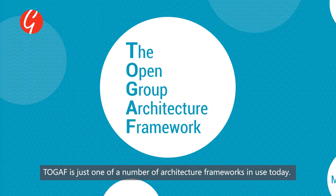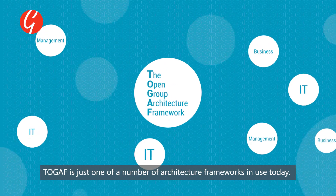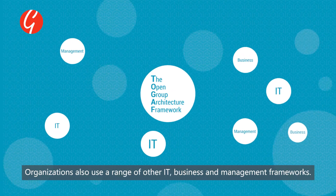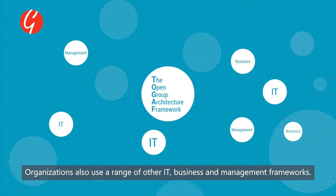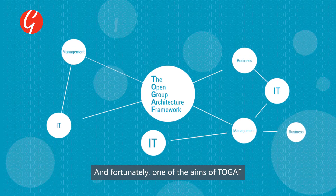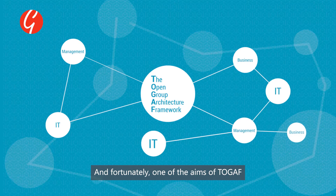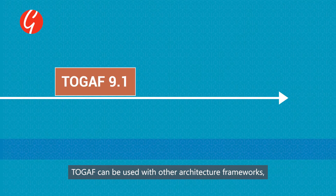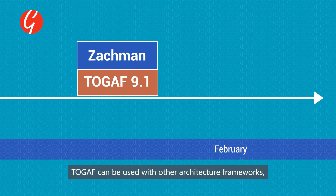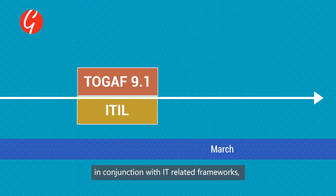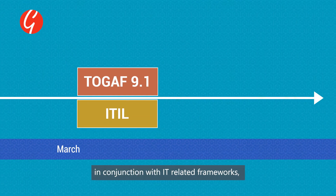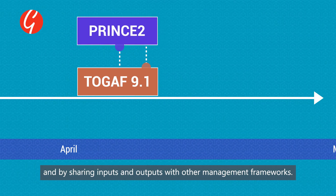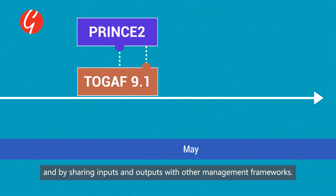TOGAF is just one of a number of architecture frameworks in use today. Organisations also use a range of other IT, business and management frameworks. One of the aims of TOGAF is that it should be used in conjunction with these other industry standards. TOGAF can be used with other architectural frameworks, in conjunction with IT related frameworks, and by sharing inputs and outputs with other management frameworks.